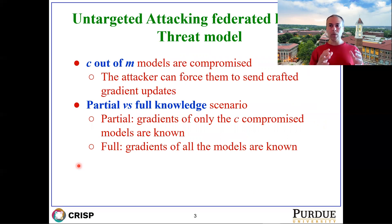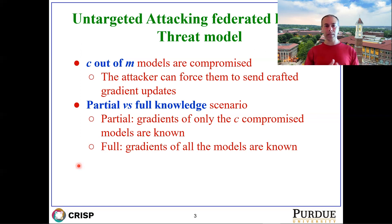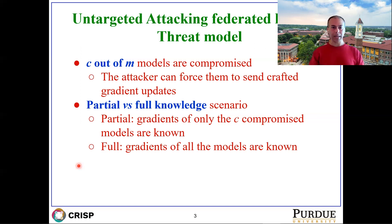Within this context, there are two kinds of threat models: partial and full. In the partial knowledge scenario, the malicious nodes do not know the communication between the benign nodes and the server. In the full knowledge scenario, the malicious nodes know about that as well. In both cases, the malicious nodes can behave in an arbitrary manner.